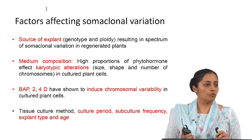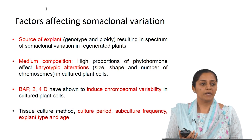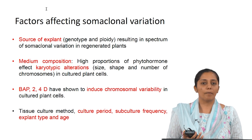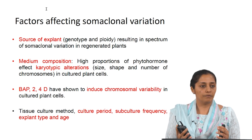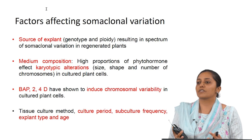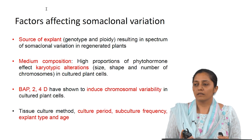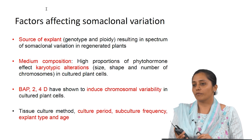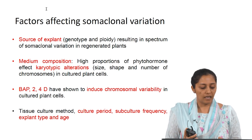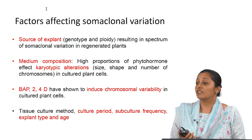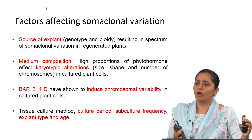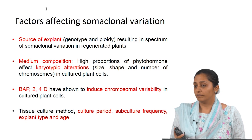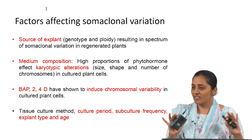What are the factors which can affect somaclonal variation? The source of the explant — the genotype of the explant or the ploidy levels in plants. Then medium composition — if there are higher amounts of phytohormones or plant growth regulators, for example BAP and 2,4-D, they can act as a stress and bring about karyotypic alterations. Genetic variability can happen in terms of chromosome number, chromosome shape, and size. Culture period is also a factor — it is generally recommended that long-term cultures kept for very long under the same conditions will show these changes. The subculture period and subculture frequency are also factors — it is recommended to keep conditions consistent.